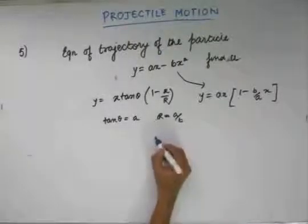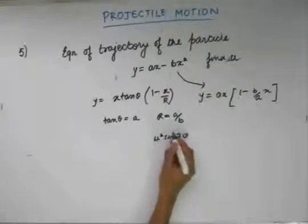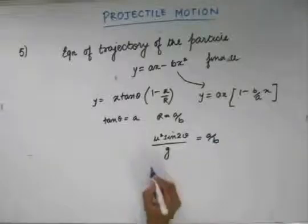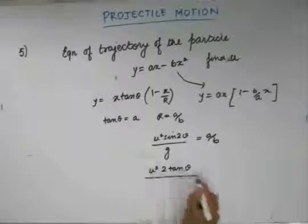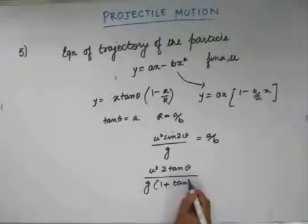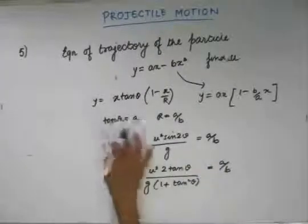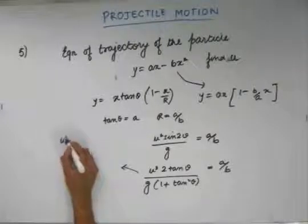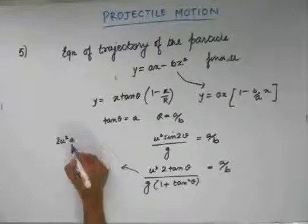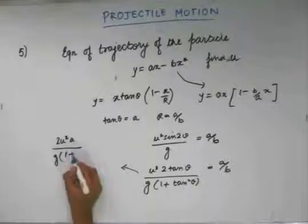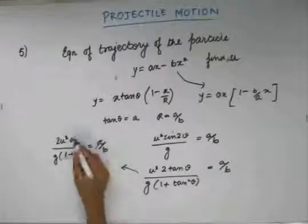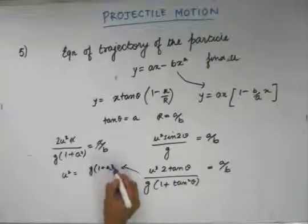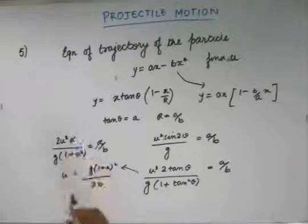We also know that the range of the particle is given by u squared sin 2 theta by g. This sin 2 theta I can write as 2 tan theta by 1 plus tan squared theta. So the range equals u squared times 2a divided by g times (1 plus a squared), and this equals a by b. The a gets cancelled and u will be equal to the square root of the resulting expression.